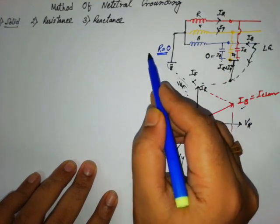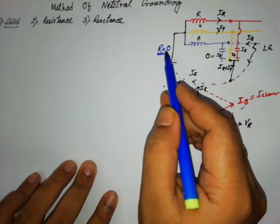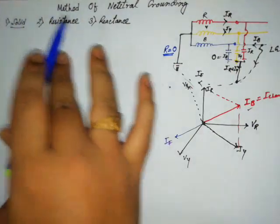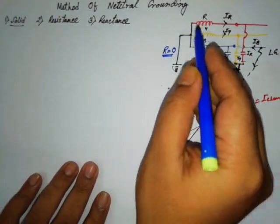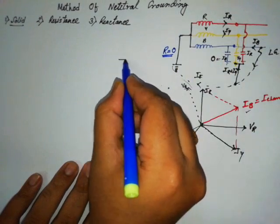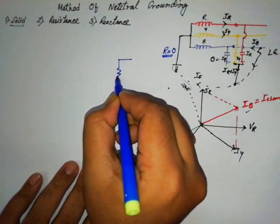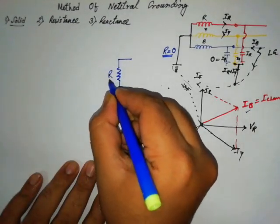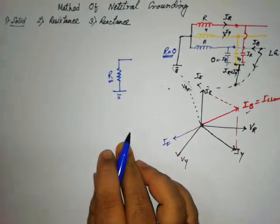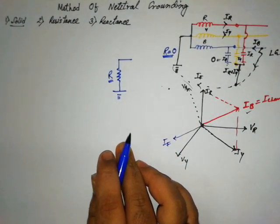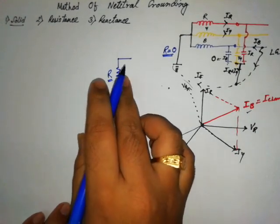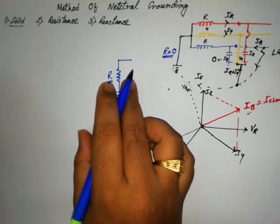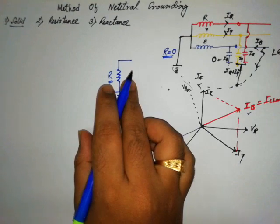This is the main problem with the solidly grounded system. So what we will do is replace this by providing a resistance. The value of the resistance will vary depending on the situation. Resistance grounding is normally used where the charging current is small.